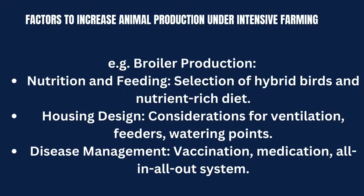What are the factors that increase animal production under intensive farming? If we look at broiler production as an example, there are various factors that come into play. Nutrition and feeding play a crucial role — birds are fed a nutrient-rich diet to ensure rapid growth and readiness for the market. Additionally, proper housing design and disease management are essential for maintaining healthy livestock.